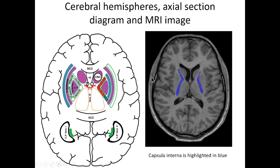This is F — fornix, or columna fornicis. And this is septum pellucidum. Behind the fornix, this narrow cavity is ventriculus tertius — the third ventricle — situated between the two thalami. We can see the foramen of Monroe. The arrow demonstrates on the diagram the foramen of Monroe — the foramen which connects the third ventricle and the anterior horn of the lateral ventricle, also called the foramen interventriculare.